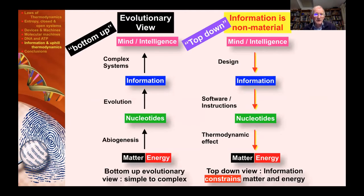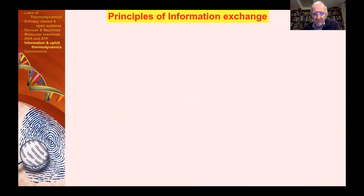So as I close, the evolutionary view, which is the bottom up view on the left, says that matter and energy produced the nucleotides, which produced information, which then showed mind and intelligence at work. But actually, it's the opposite. The real science shows that information, which is non-material, comes from our mind and intelligence, controls through information systems the hardware of nucleotides and the thermodynamics and the biochemistry of matter and energy. It is the top down view, which is the correct view of thermodynamics and information systems.